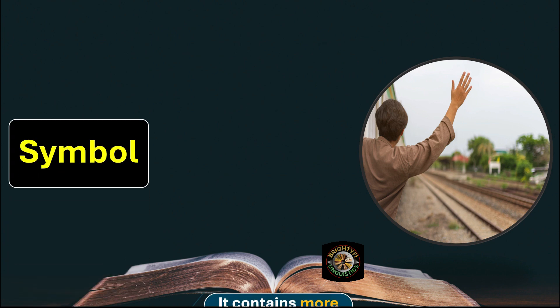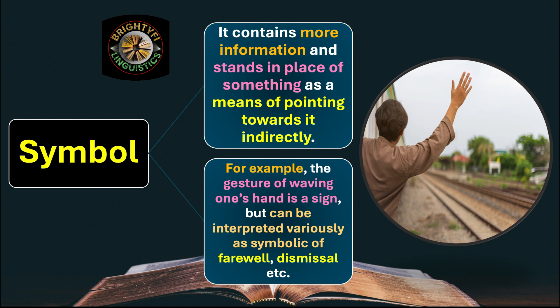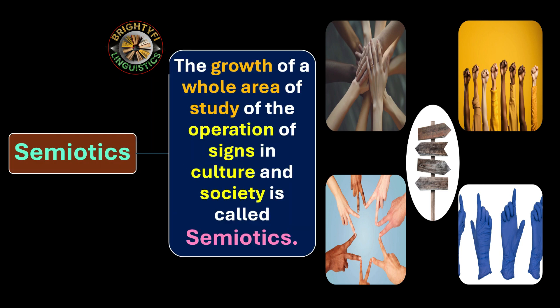A symbol contains more information and stands in place of something as a means of pointing towards it indirectly. For example, the gesture of waving one's hand is a sign, but it can be interpreted variously as symbolic of farewell, dismissal, disapproval, and so on. So waving a hand is an act of sign, but the interpretations of waving hands in different situations, different contexts, and different backgrounds — that is the symbol.